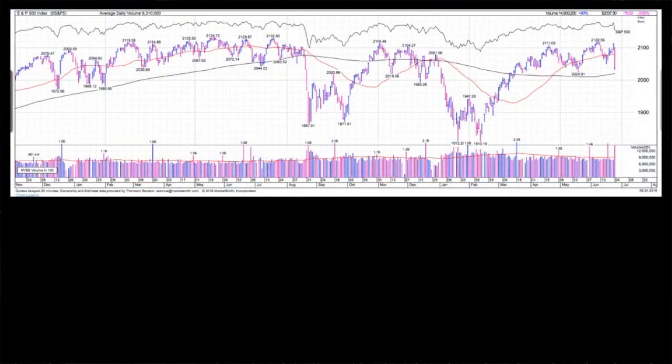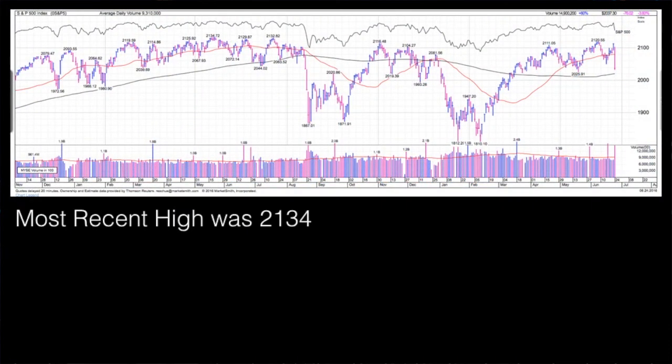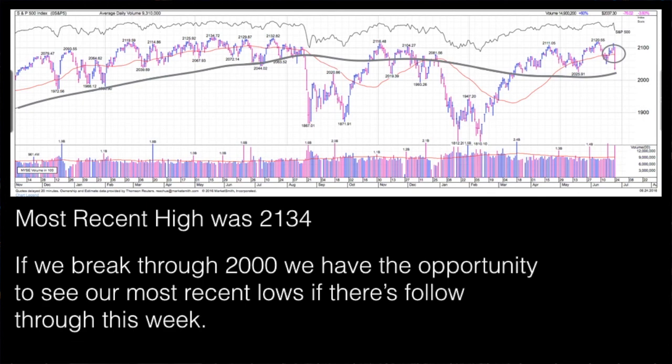Next up, the S&P. Right. We've looked at this all year. We've been in this tight trading space for two years. Right. Our most recent high was 2134. We continue to be in a downtrend. With our big move on the downside on Friday, we really broke through the 50-day. We're right at the 200-day moving average. If we break through that 2000 level, which is where we are right now as I do this video, I think that we have a real good opportunity to see our most recent lows if we see some follow-through this week.